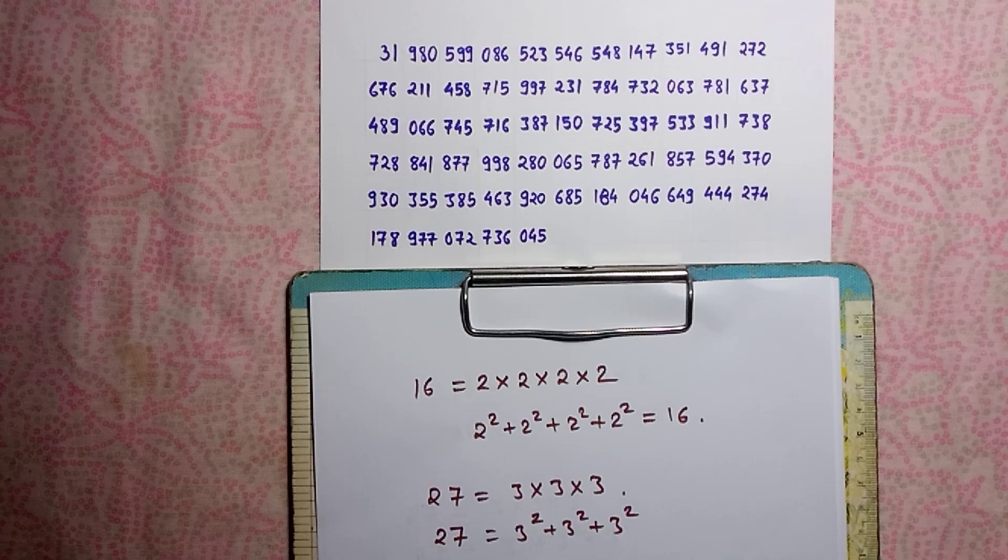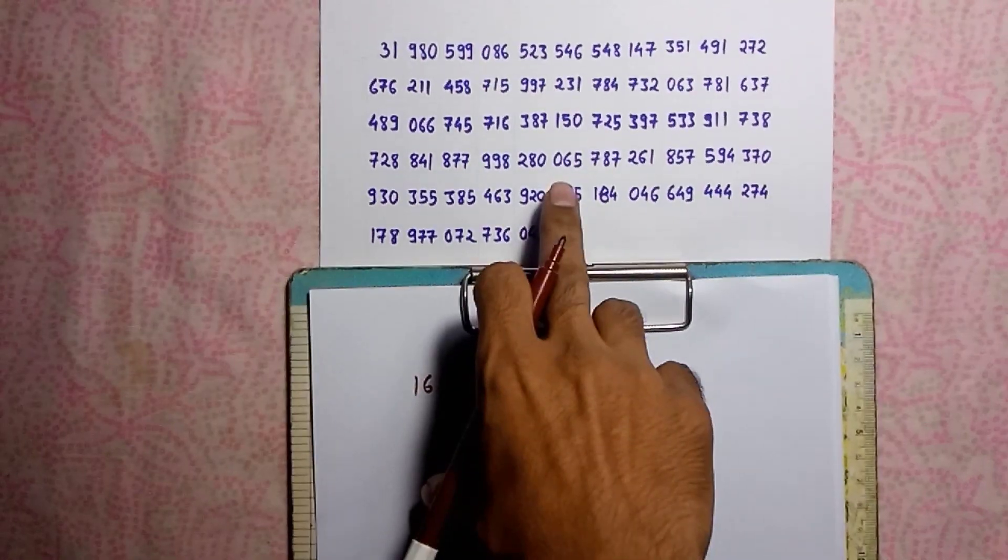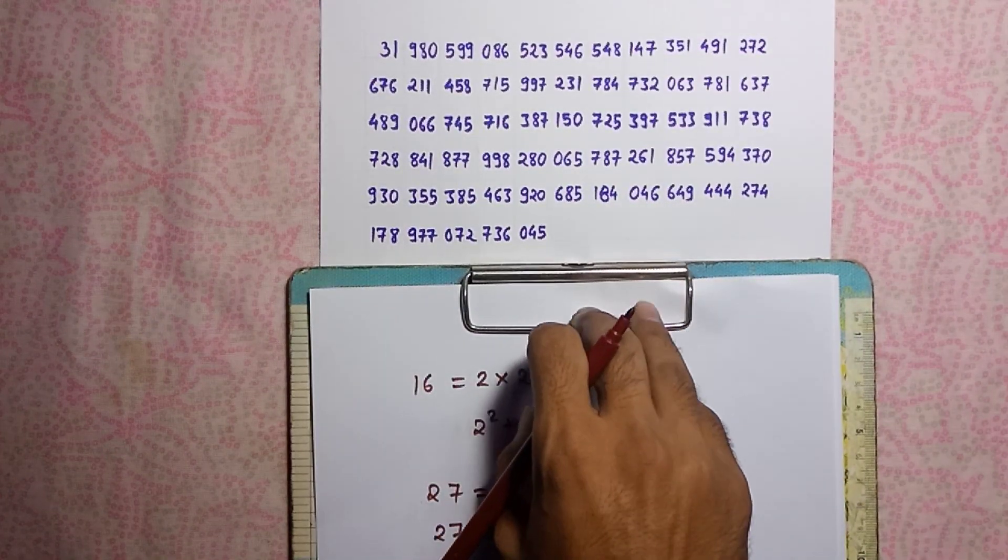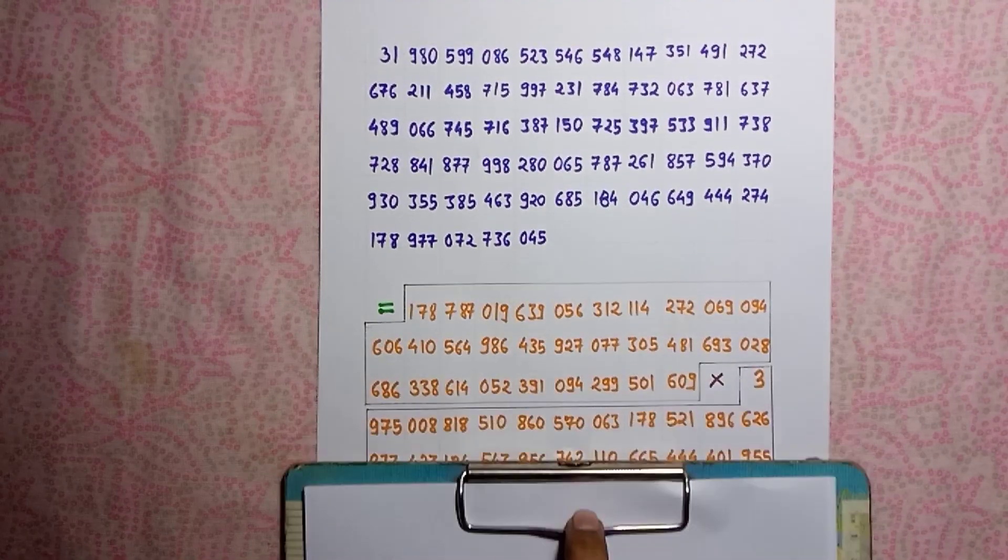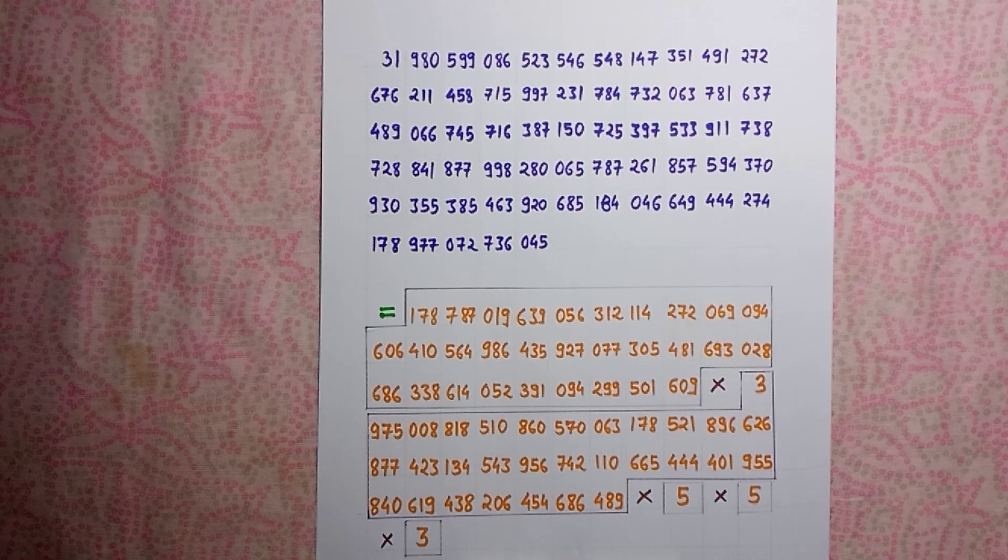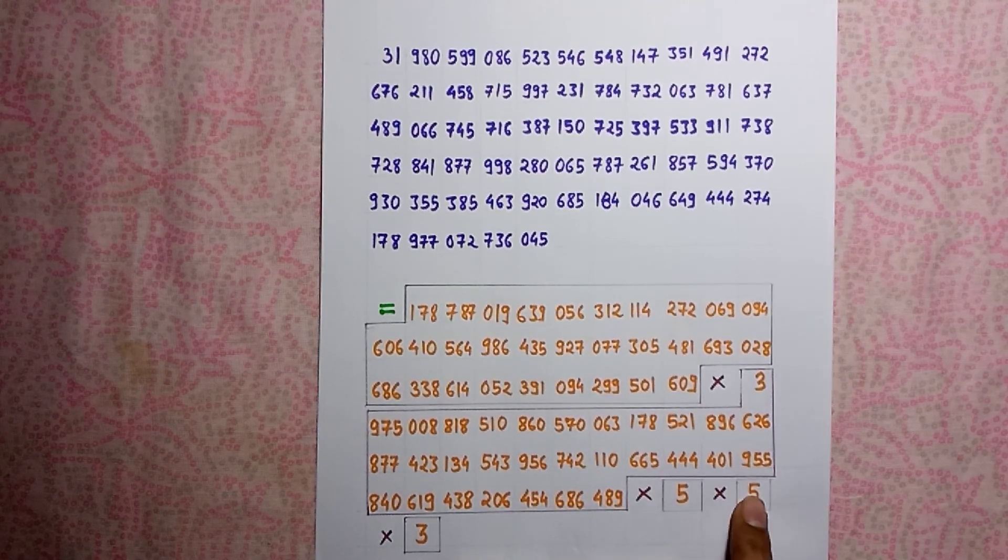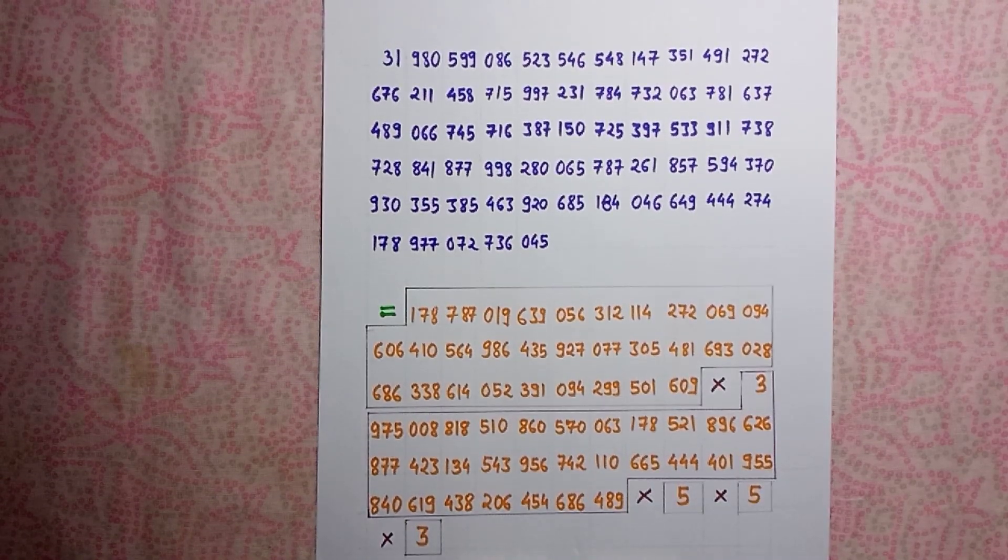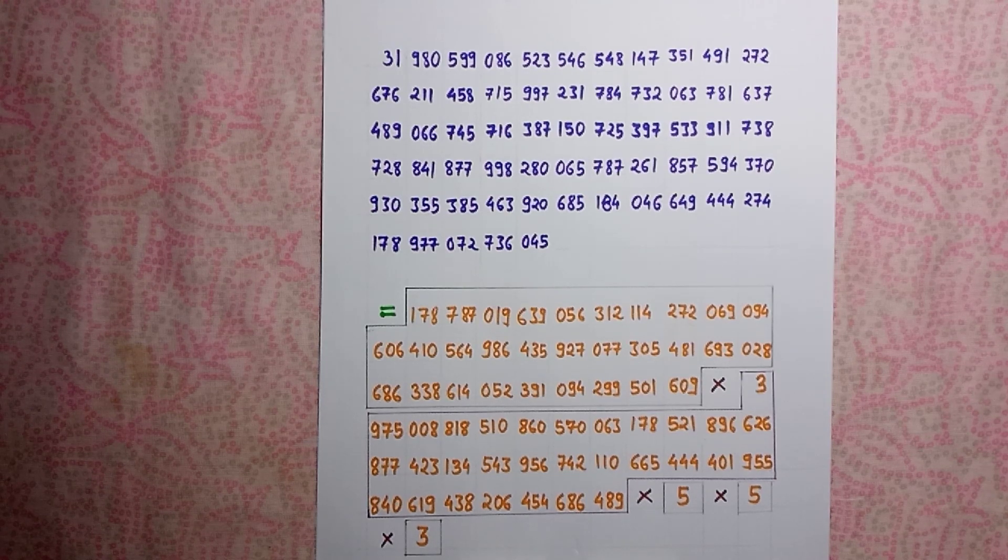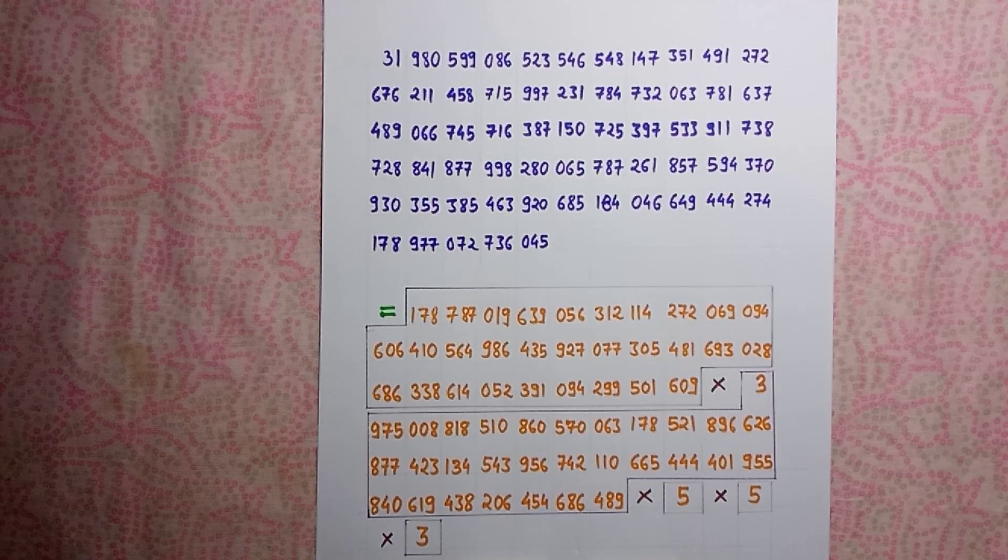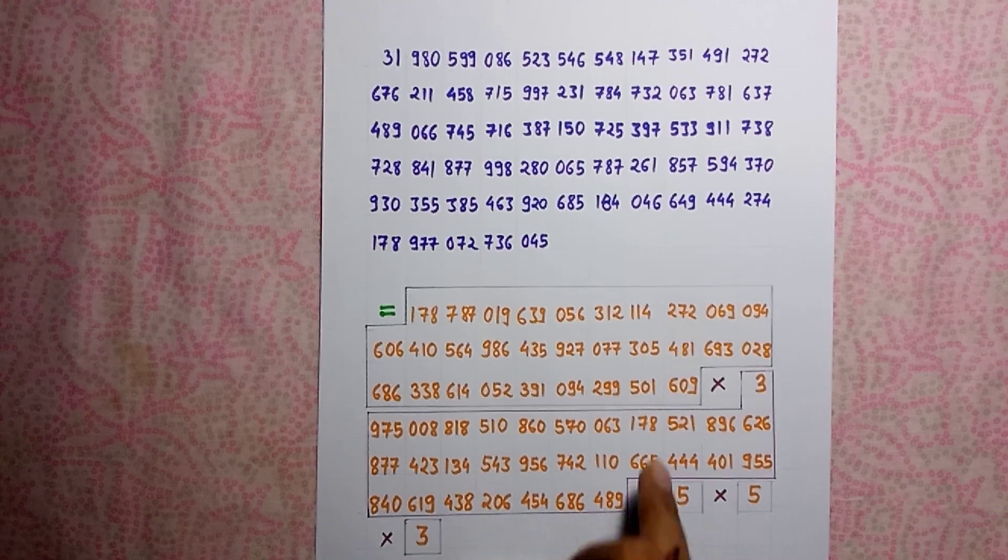And this is the number which we have similar property. It have five prime factors: first prime factor, second prime factor, third prime factor, fourth and fifth. And again the sum of squares of its prime factors gives this number.